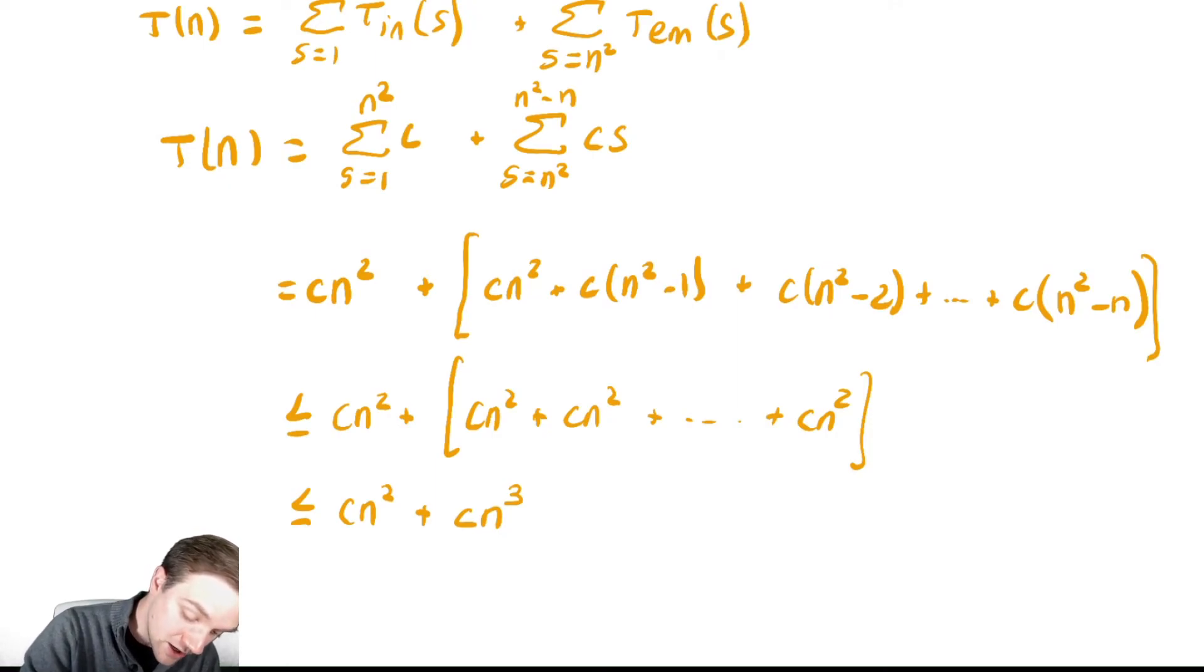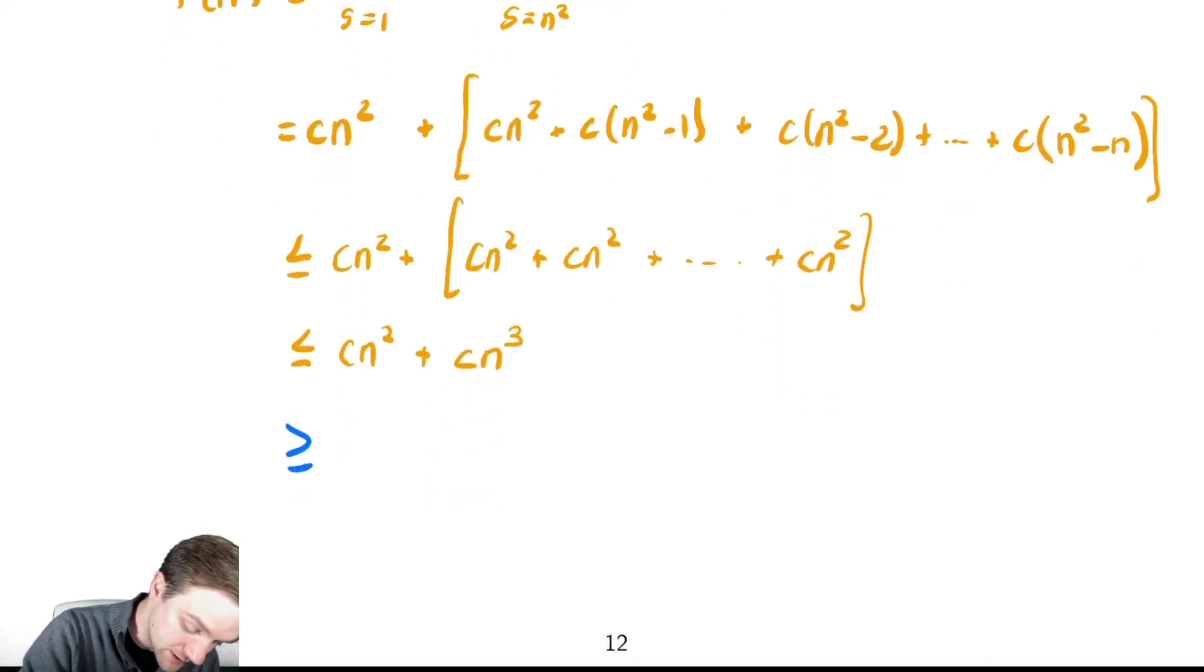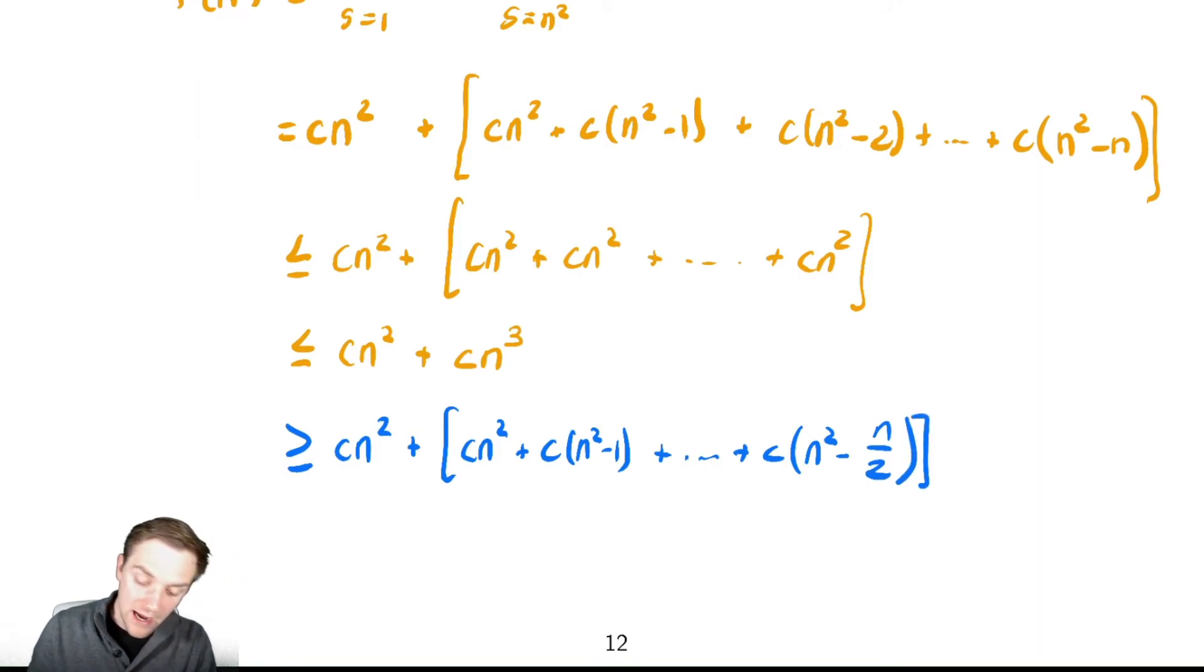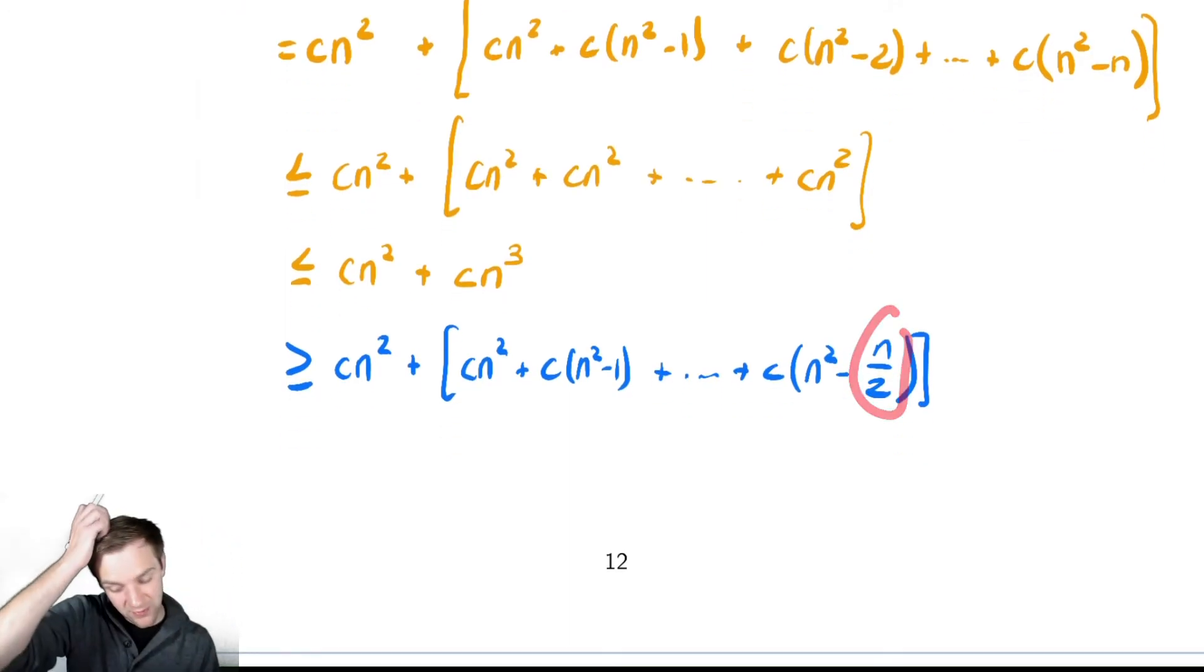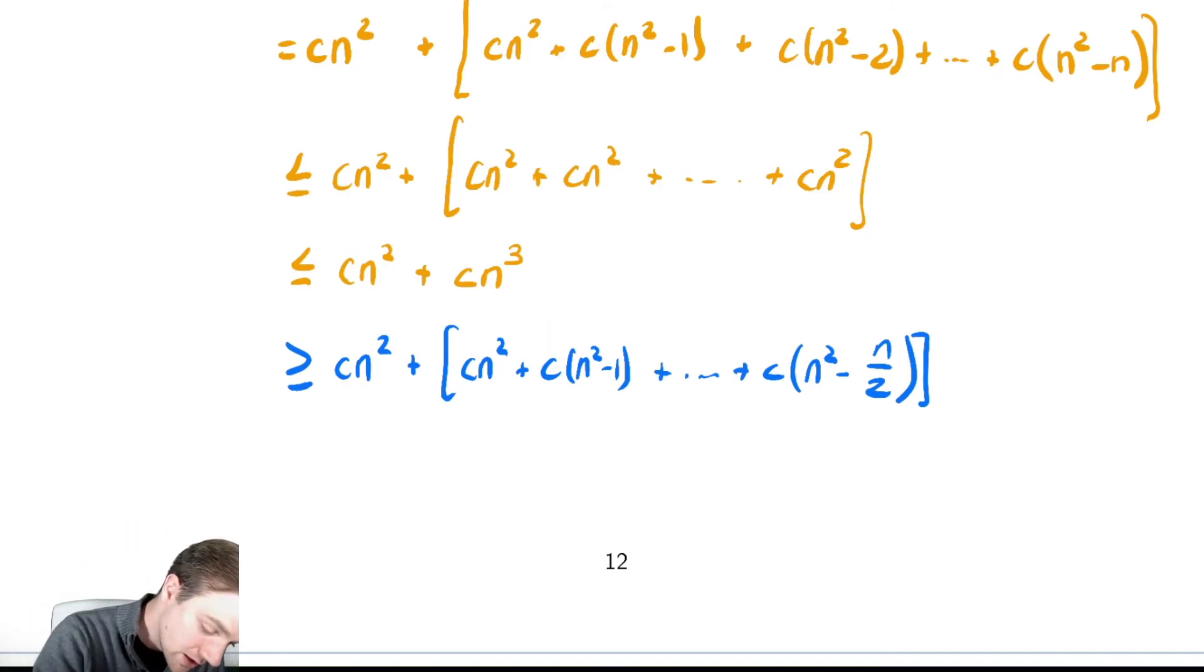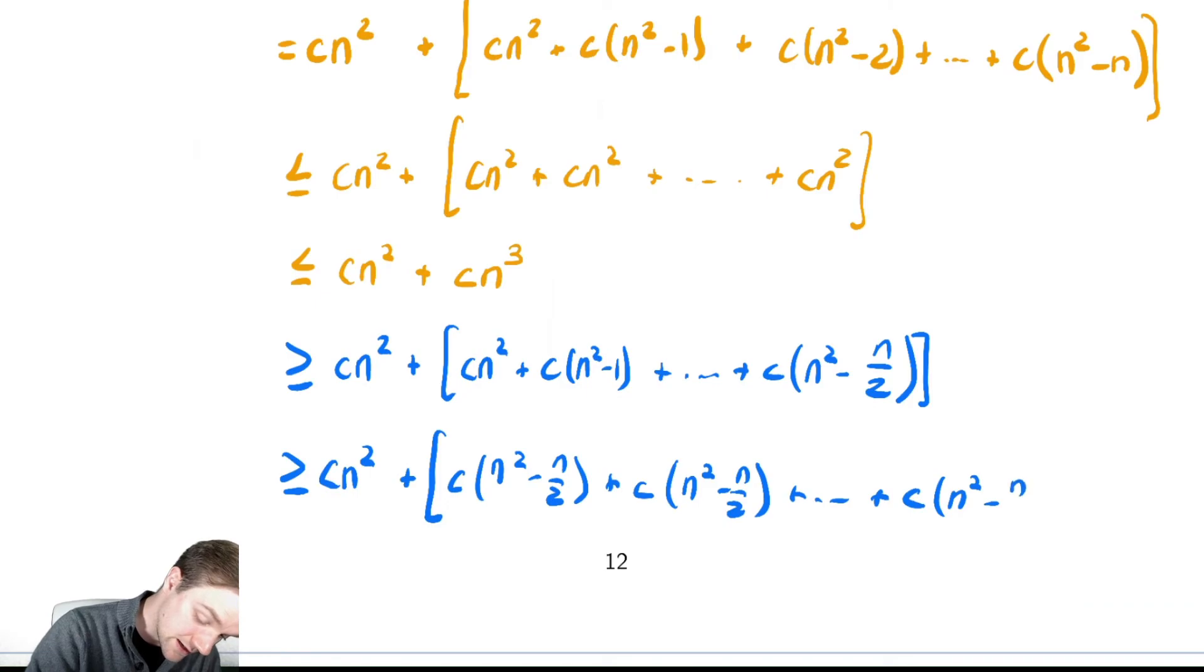To bound it below, I need to cut it off in the middle. So I'm going to say this is greater than or equal to c n squared plus c n squared plus c n squared minus 1 plus all the way down until c n squared minus n over 2. And now, I need to be a bit careful about what I do here, because this term doesn't look very convenient, so let's make sure we're careful. So we have greater than or equal to c n squared plus replace every single term with the smallest, so we have c times n squared minus n over 2 plus c times n squared minus n over 2 plus all the way down until c times n squared minus n over 2.